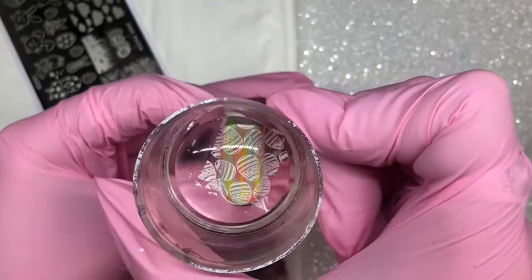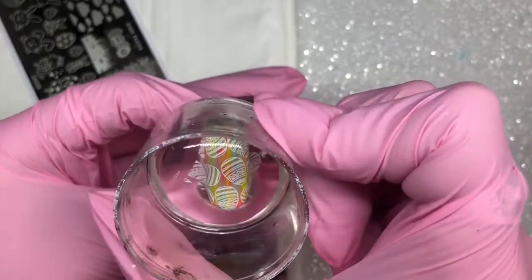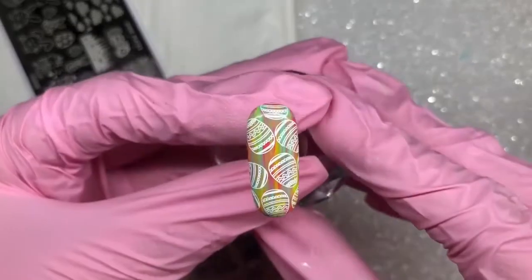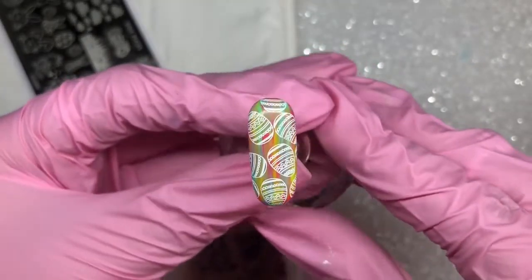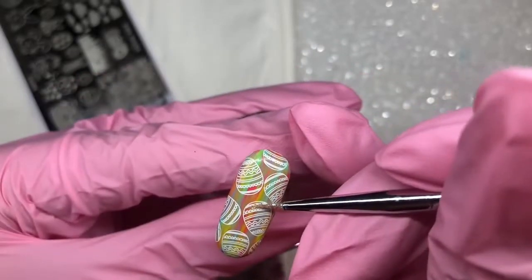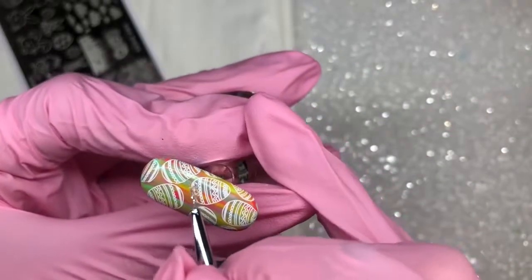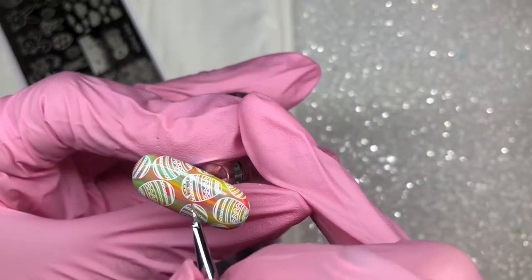I'm using this top right image here. You can see how well that picks up and how well etched these stamping plates are. They're fab. I'm just stamping that directly down onto the nail. Look how cute those little Easter eggs are. The colors in the background just go so beautifully with them.